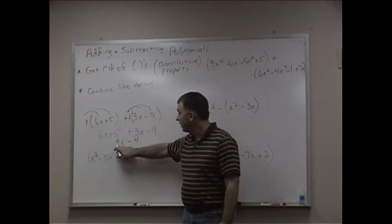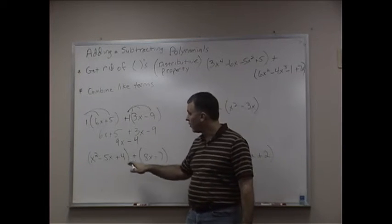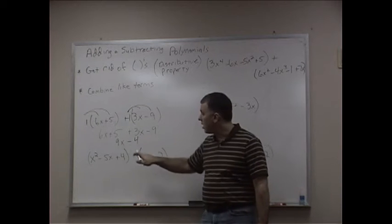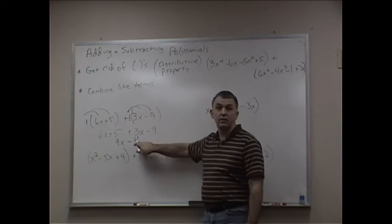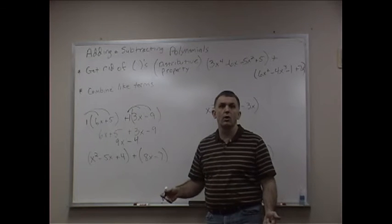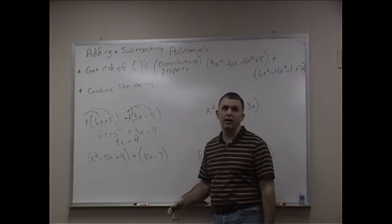So my final answer there is 9x minus 4. You cannot combine those because this has got an x and this doesn't. That's one of the combining like terms. You learned that back in the first or second week of the class.